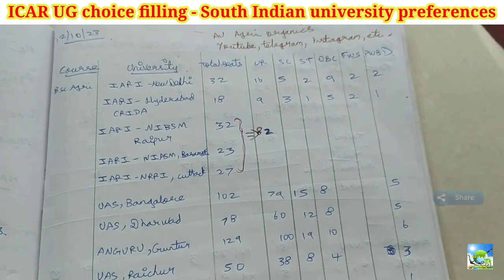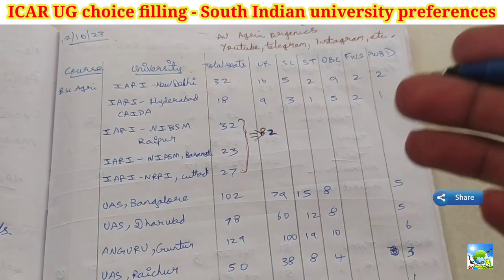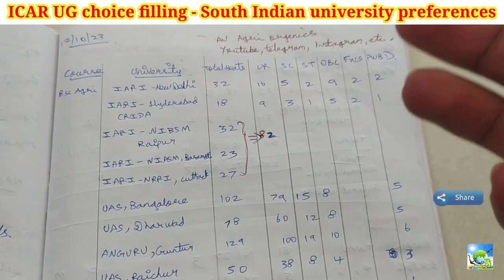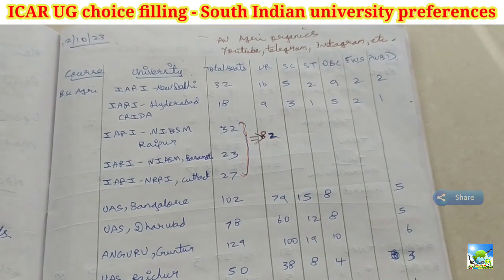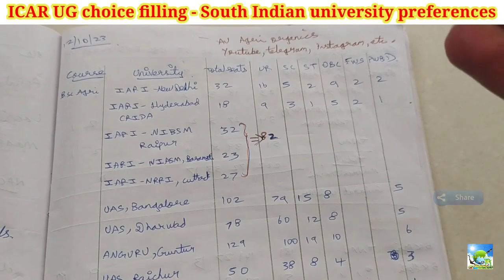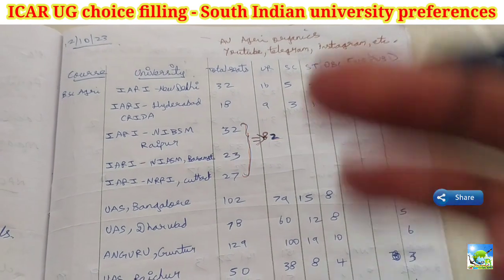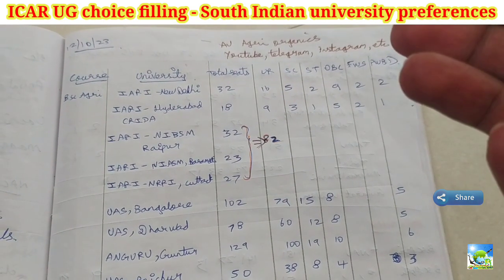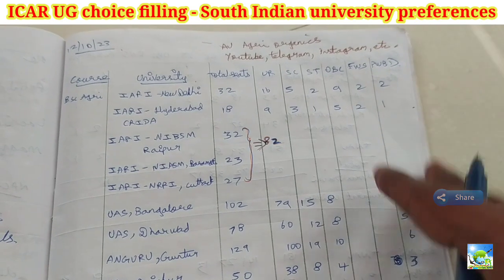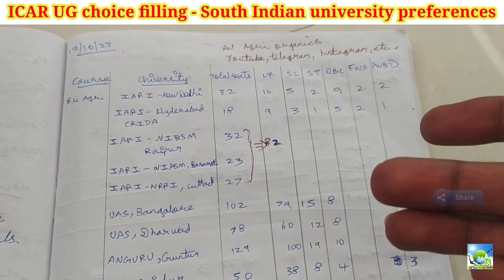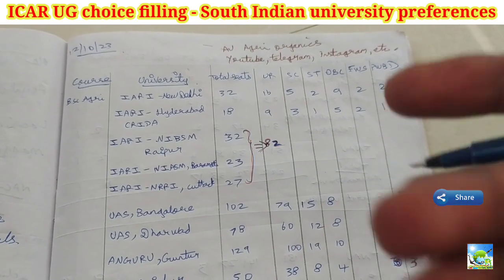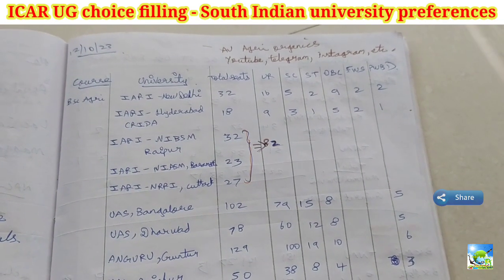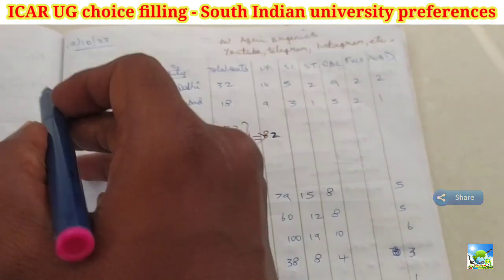Before going into this video, if anyone is in need of this, kindly share it with them as it is very useful. Choice preferences should not be bad — after the third or fourth round of counseling, some people should not regret making wrong choices. This will be the best choice guidance I can offer. If you are from South India, this preference list will be good. If you are from outside South India, please also consult your seniors or other guides.